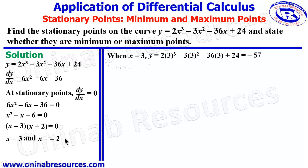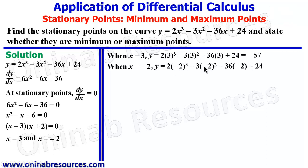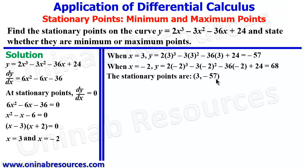We pick the second value. When x is negative 2, we substitute into the function: y equal to 2 times (negative 2) cubed minus 3 times (negative 2) squared minus 36 times (negative 2) plus 24, and this gives 68. So the stationary points are (3, negative 57) and (negative 2, 68).